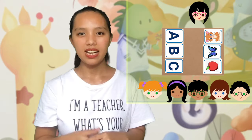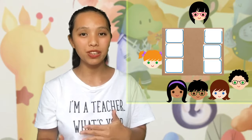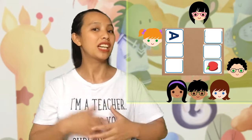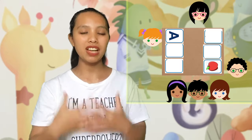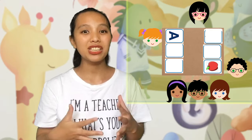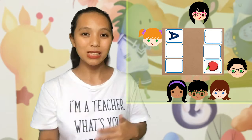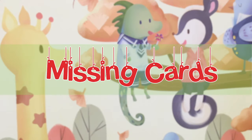Game 9 — Group Memory: This is a group version of the memory flashcard game. Place one set of flashcards on the left and another set on the right. A student comes forward and turns over one card from each set. If the flashcards match, they stay facing up; if they don't match, they're flipped back down and the next player takes their turn.